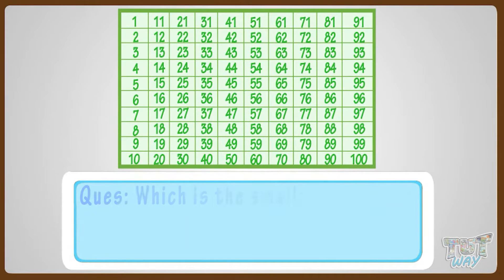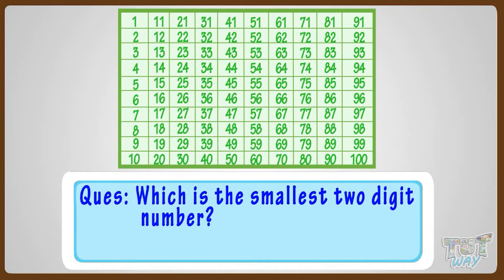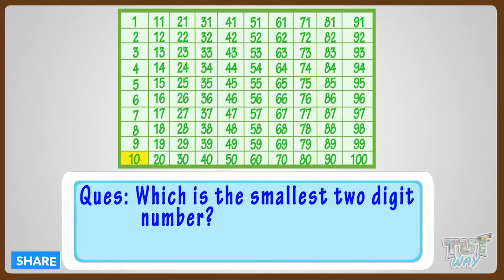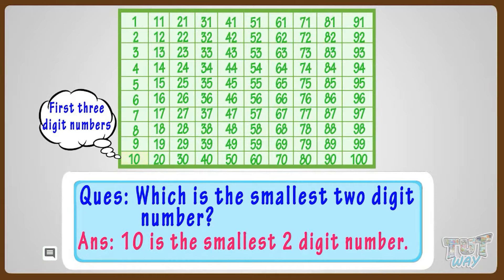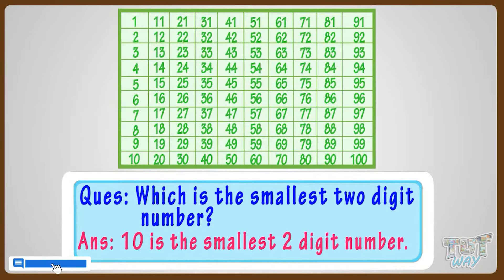Now let's find out the smallest two-digit number. Can you guess? Two-digit numbers start from 10, so 10 is the smallest two-digit number. Good!